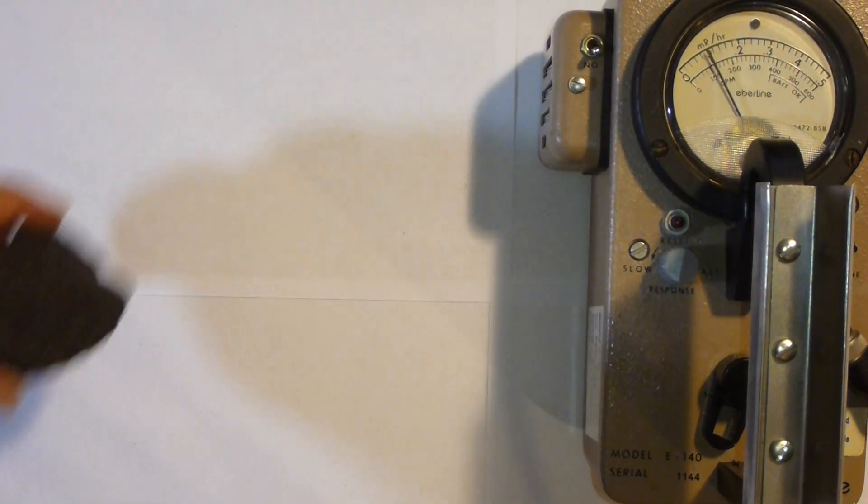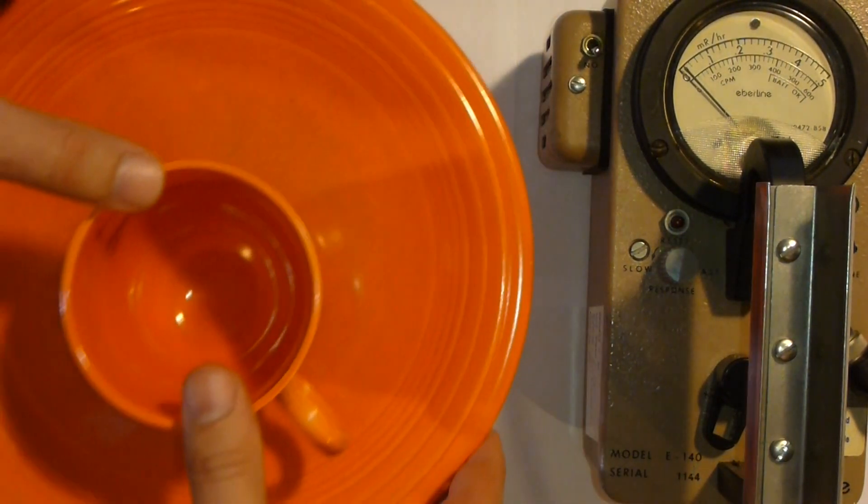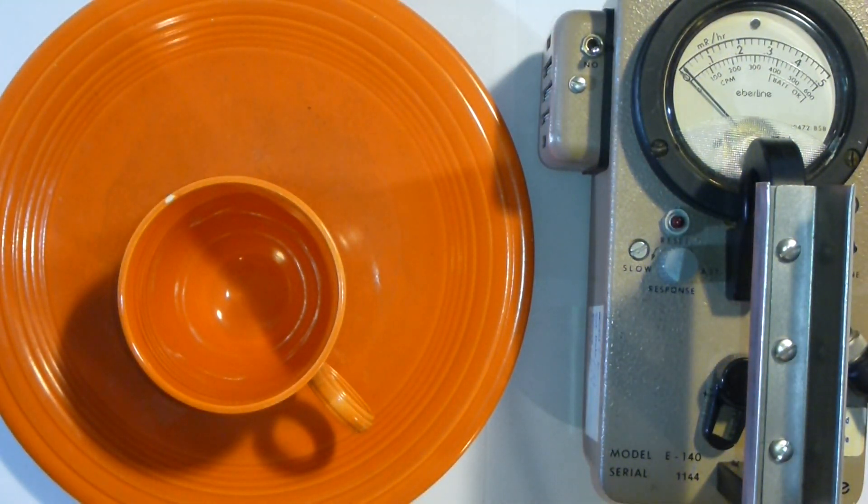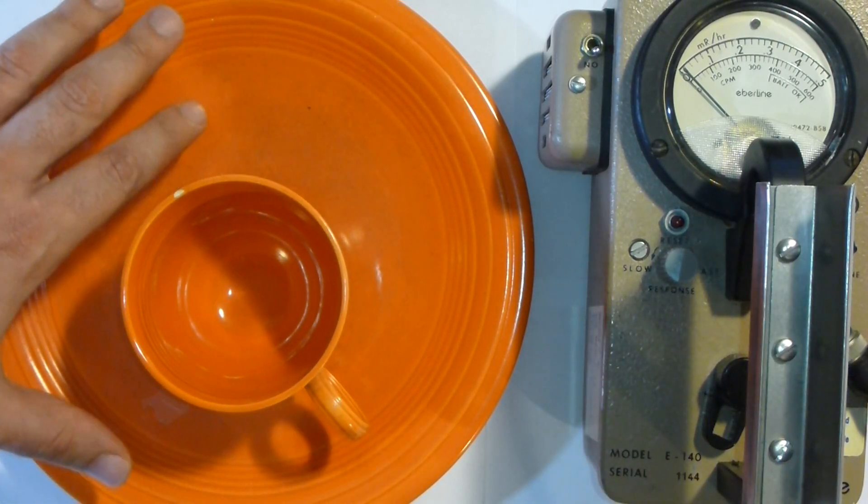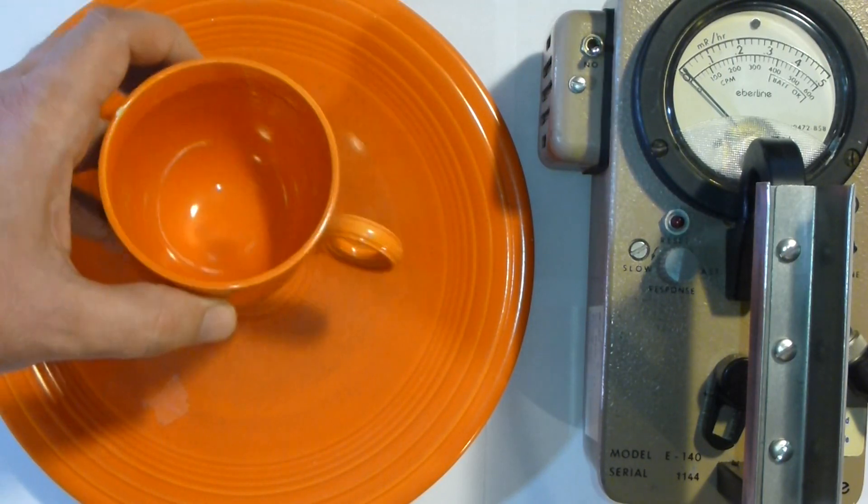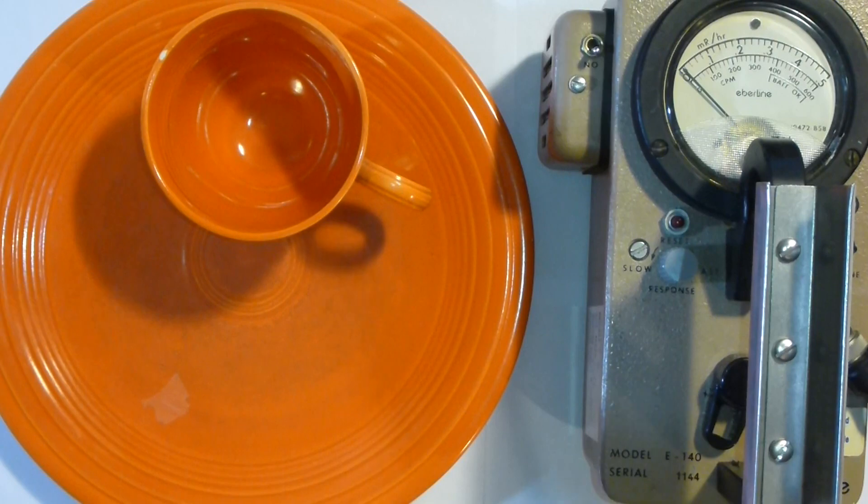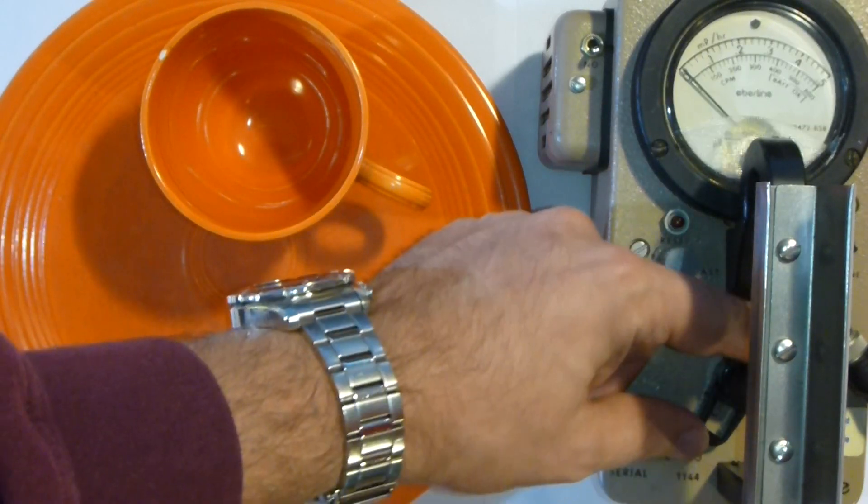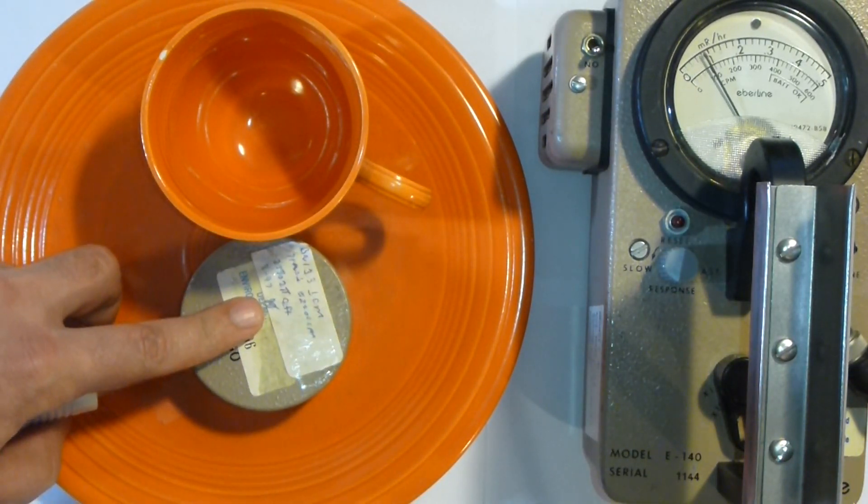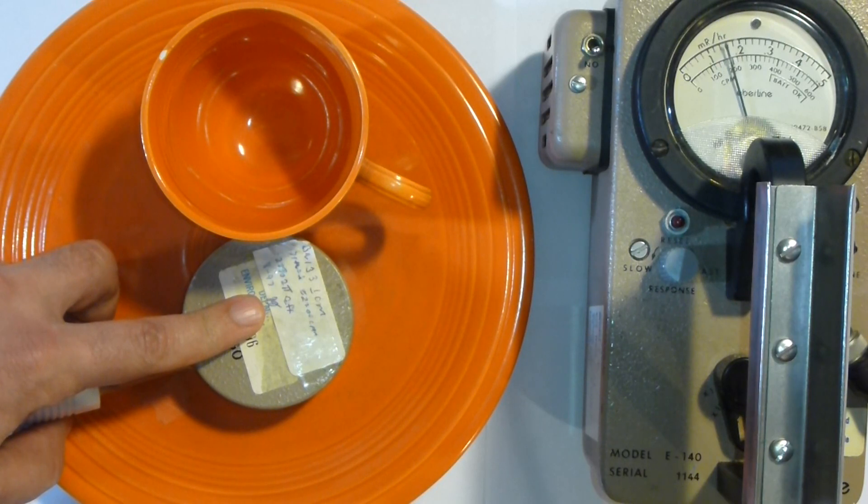And then last, but probably most interesting, this is some bright orange to red fiesta ware. This was a type of cheap ceramic dining ware that was sold, I think, in the 1960s. It's got a very brilliant bright orange red color. This is just a plate and a coffee cup, nothing particularly spectacular. But it does contain depleted uranium in the glaze. So I'm going to switch up the scale on this again and put the probe right on there. And so that's reading about 20 millirem per hour.